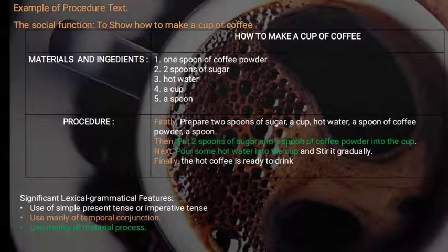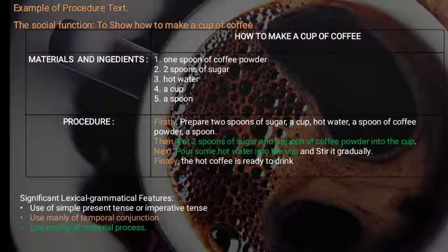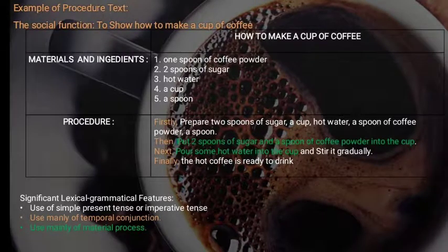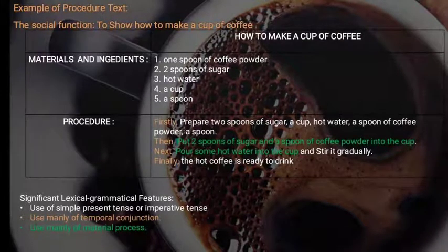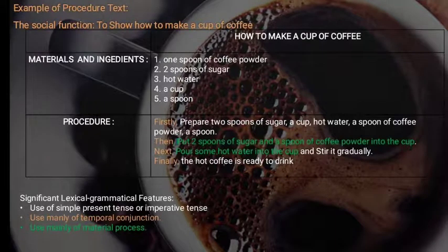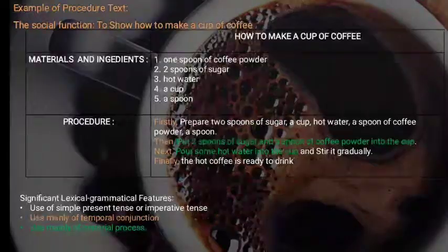From the example of procedure text, the significant lexical and grammatical features used are: first, use of simple present tense or imperative; second, use mainly of temporal conjunctions — highlighted in orange; and last, use mainly of material processes — highlighted in green.